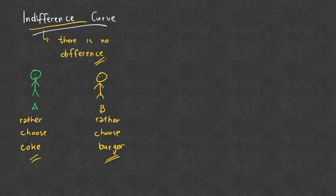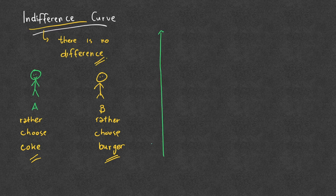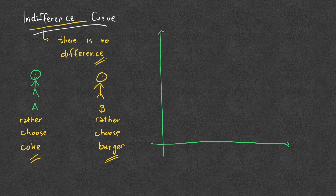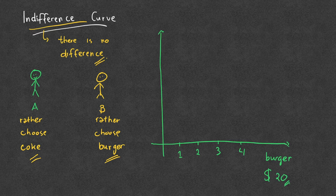Let's come back to the graph we already made before, which is related to Coke and burger. You have a line — the same line as before. Let's say each burger costs twenty dollars and each Coke costs five dollars.